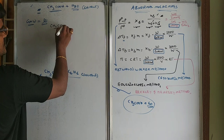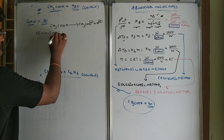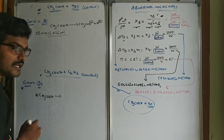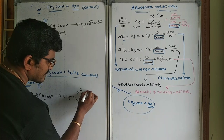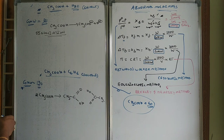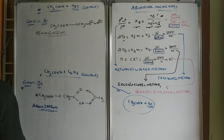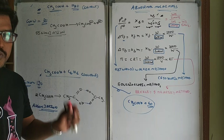When CH₃COOH dissolves in water, it forms CH₃COO⁻ and H⁺ — it undergoes dissociation. When acetic acid dissolves in benzene, because of hydrogen bond formation, it undergoes association. So there is a chance that solute particles may undergo dissociation or association.